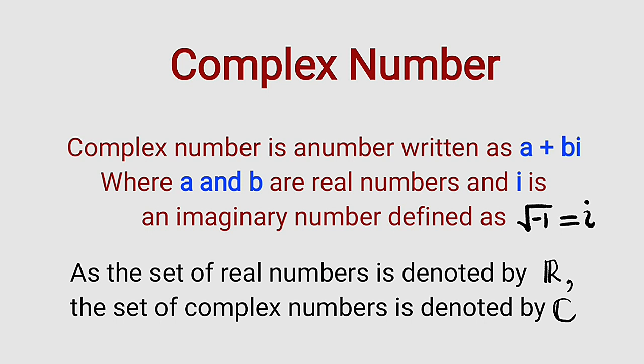Let's read this information here. It's stating that a complex number is a number written as a + bi, where a and b are real numbers and i is an imaginary number defined as the square root of negative one. As the set of real numbers is denoted by ℝ, the set of complex numbers is denoted by ℂ.